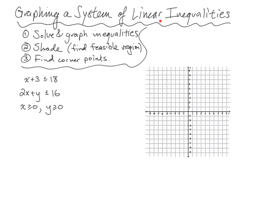Graphing a system of linear inequalities — there is a small process here. The first thing you want to do is solve each inequality for y and then graph them. You want to shade the correct region, and we will later call this finding the feasible region. Then you want to find the corner points of that particular region, and this is all set up for linear programming.